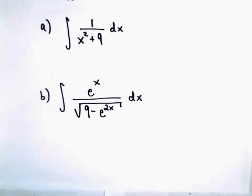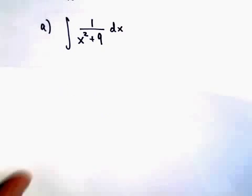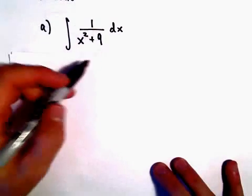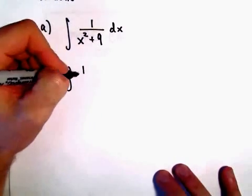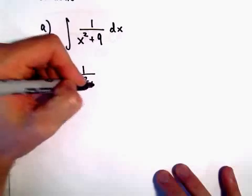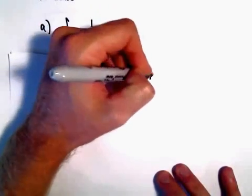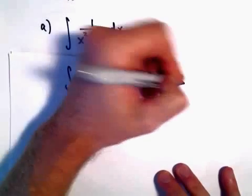So this looks hopefully pretty familiar. We've seen the derivative of arctangent, and recall the derivative of arctangent is 1 over x squared plus 1. So that tells us that the antiderivative of 1 over x squared plus 1, that's going to give us back our function arctangent of x, plus c.